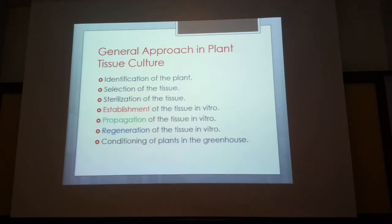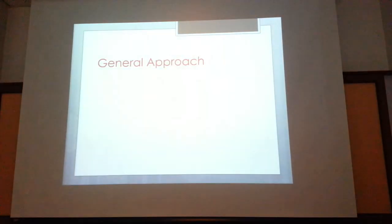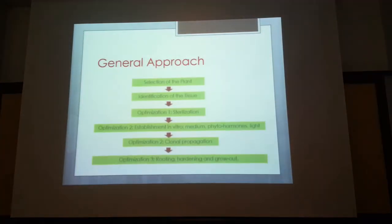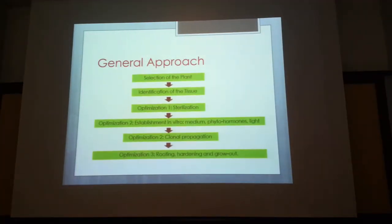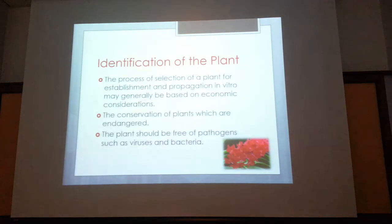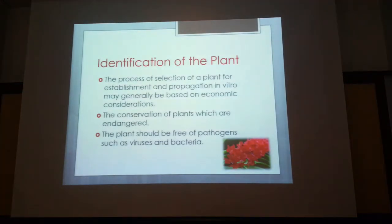So the general procedure is: identify the plant, sterilize, establish in vitro, clonally propagate, then harden and grow out the plant.